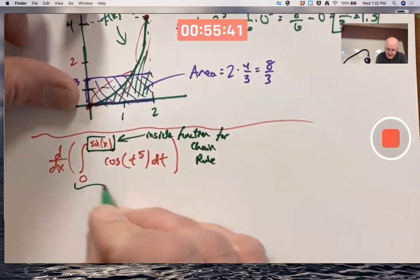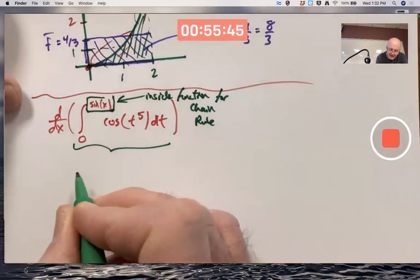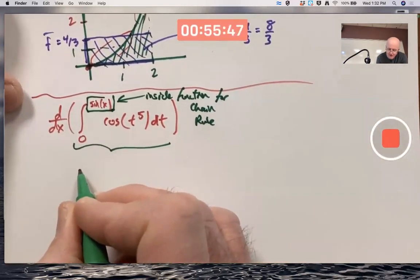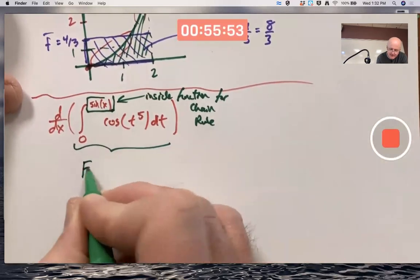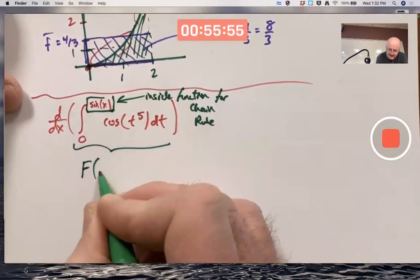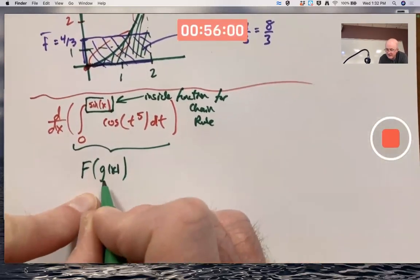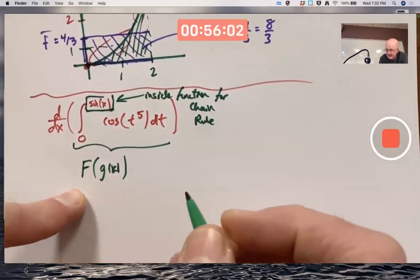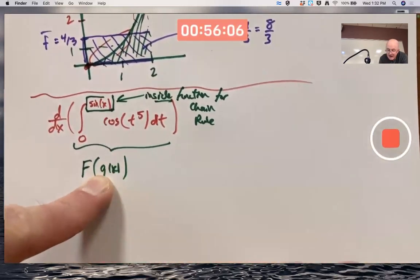In other words, I want to write this function inside the parentheses as f of g of x, where the f, I'm going to go ahead and call it capital F instead of lowercase f. I want to write that as F of g of x, some function composition with an inside function, g of x, and an outside function, F of x. I've just identified the inside function, g of x, to be the sine function. Because why?